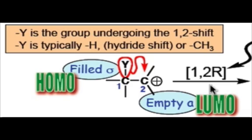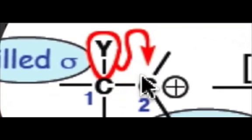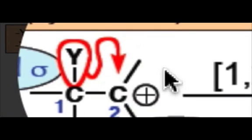Whenever a 1,2-R step is going to occur, there's going to be a pi-type interaction between a filled sigma orbital and an empty a orbital. That a orbital is going to be that carbocation, and that sigma orbital is going to be a neighboring sigma bond.